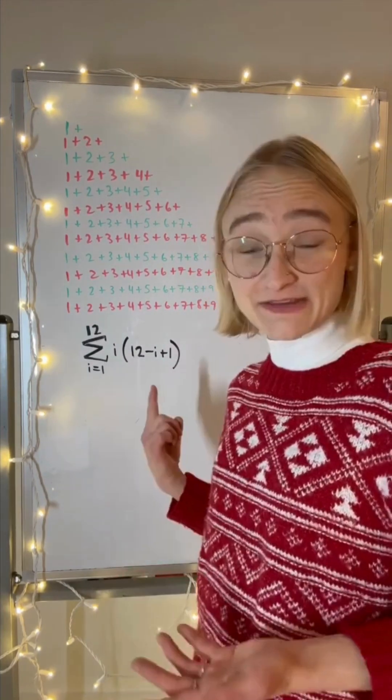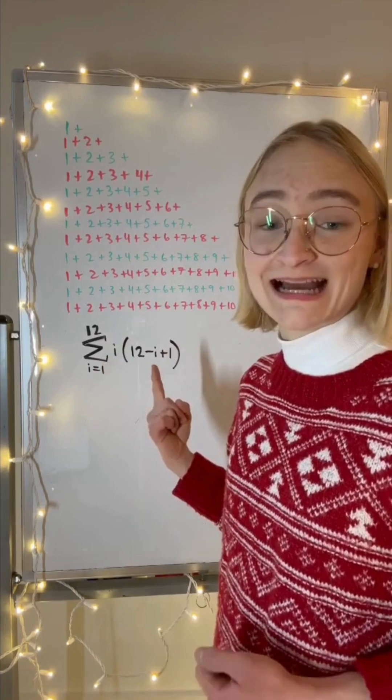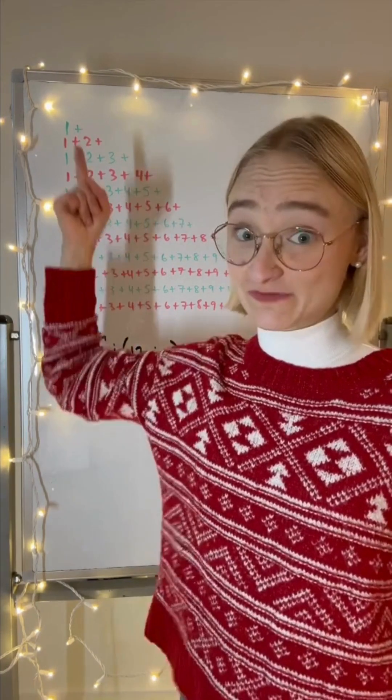If the summation is confusing, think about gift one. We receive it all 12 days. Plugging in i equals one, we get 12 minus one plus one, which is 12. We receive gift one 12 times.